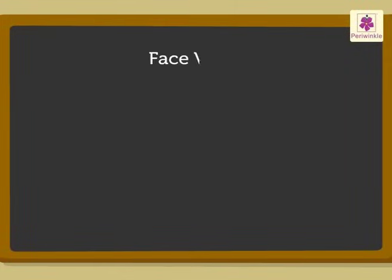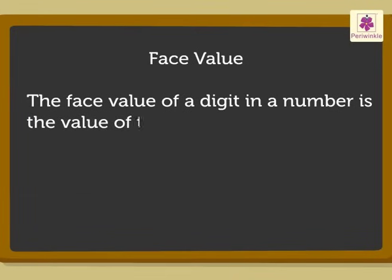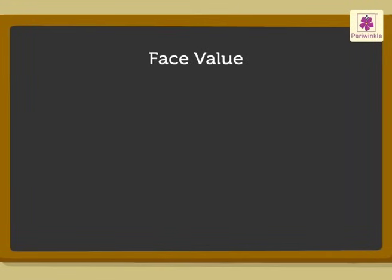Now, let us understand what the face value of a digit is. The face value of a digit in a number is the value of the digit itself. Let us look at the number 7813 again to understand this.